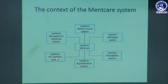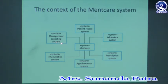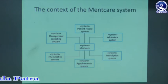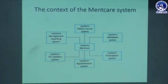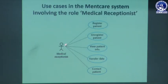Another subsystem is the healthcare statistics system, where management reports can be formatted — how many patients are there, how many recovered, how many had deaths. The management reporting system can generate reports like how many doctors are available, what type and dose of drugs are being prescribed, and how many patients there are. Because all these subsystems are available in the main care system, the medical receptionist can perform all these tasks — register, unregister, view patient information, transport data, or contact patients.